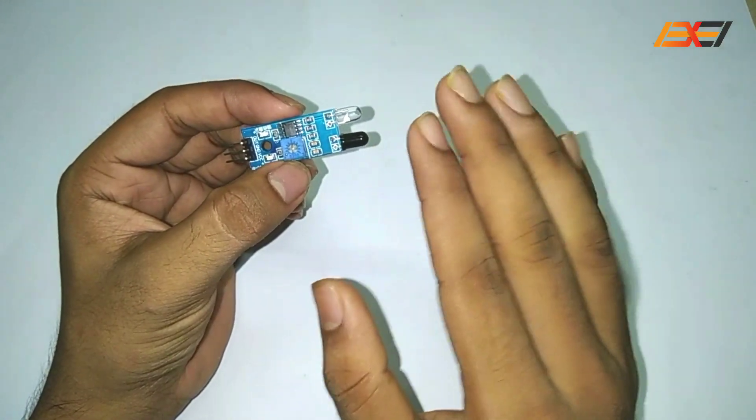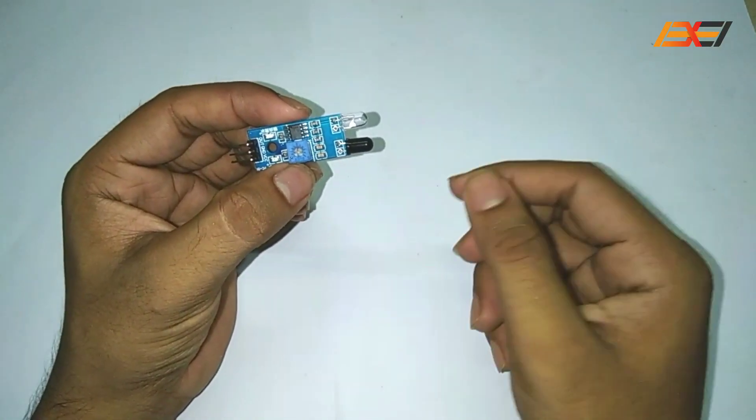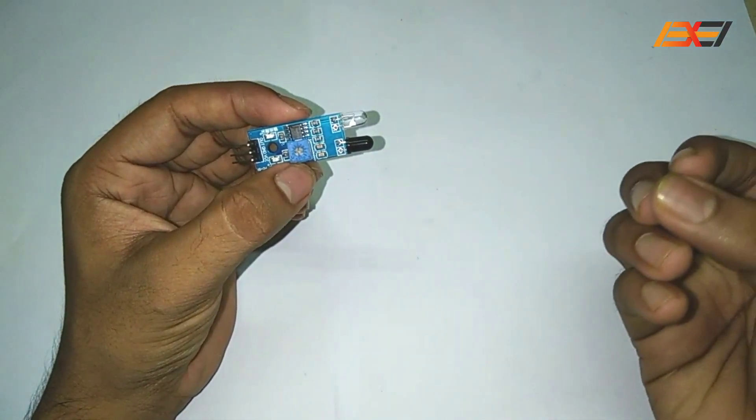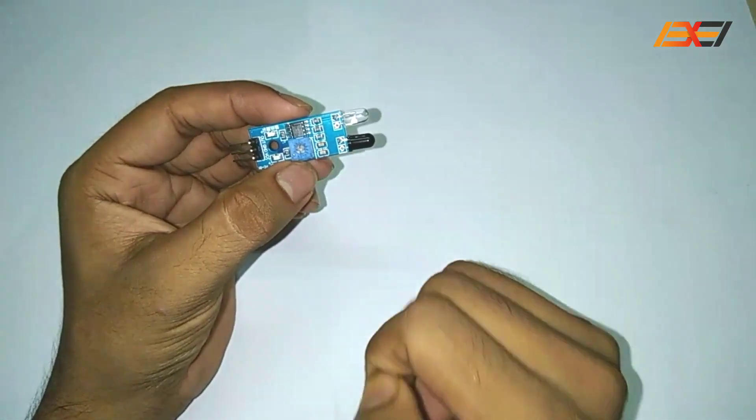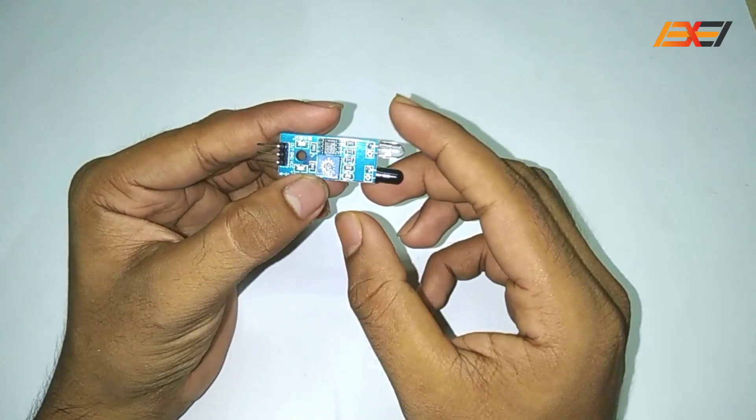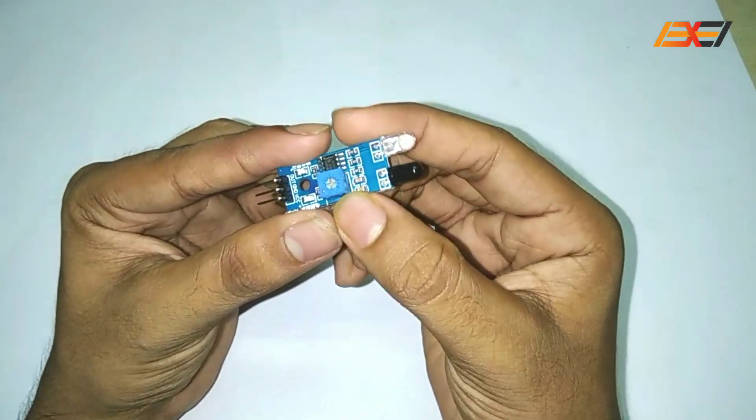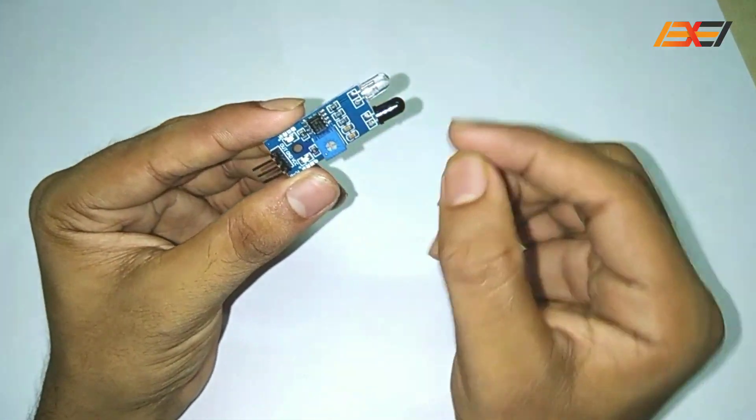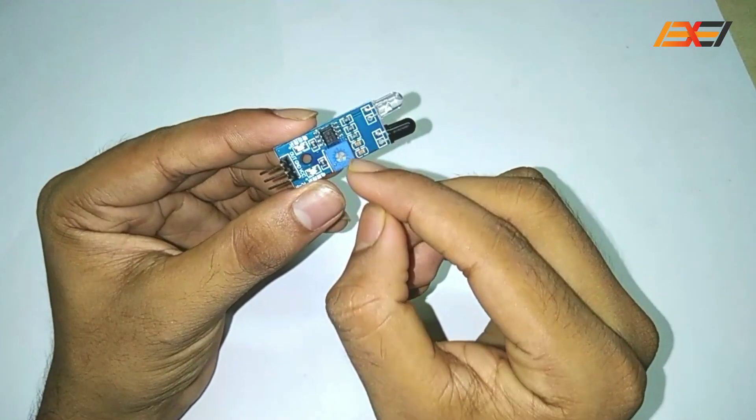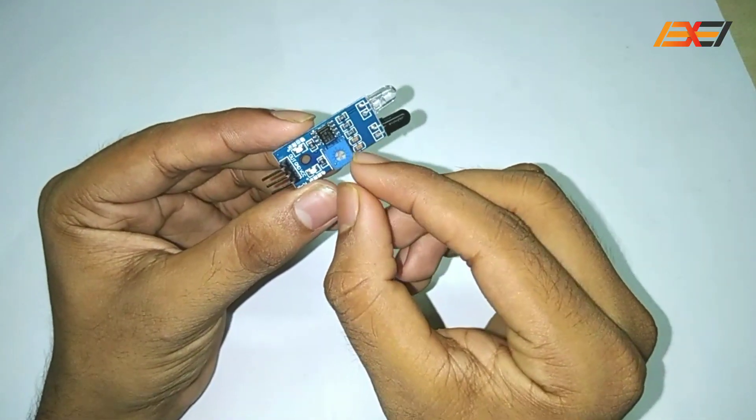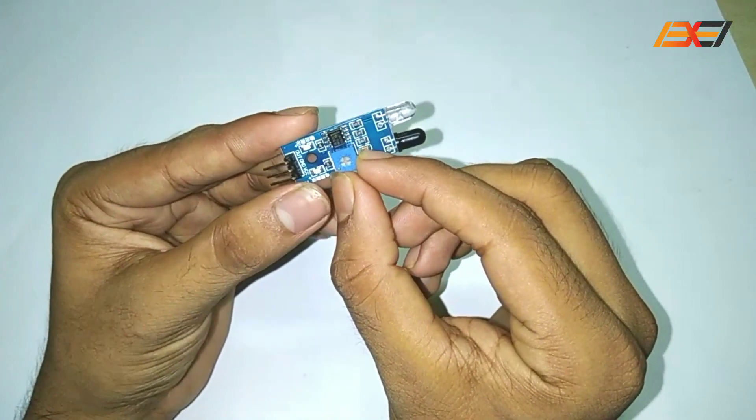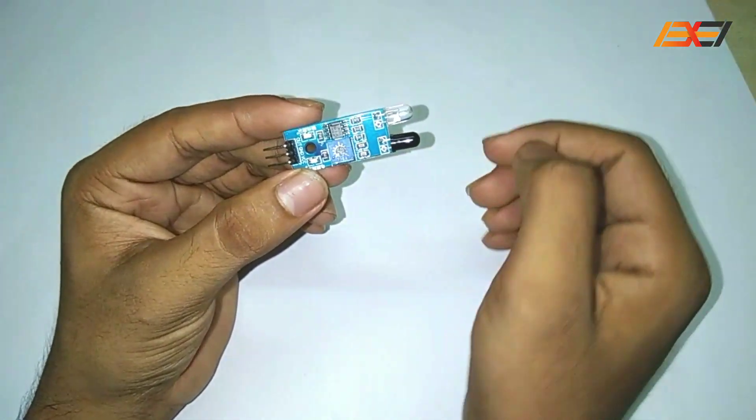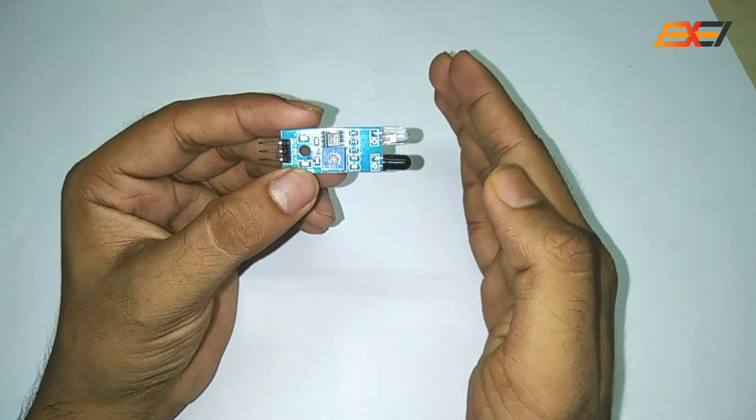You can see here one potentiometer. This is the potentiometer. You can adjust this potentiometer to vary the range of this IR sensor.